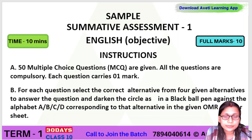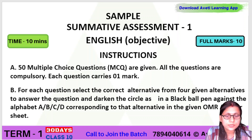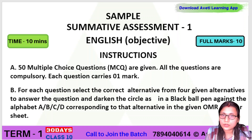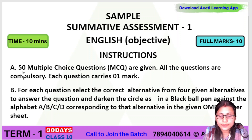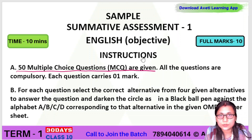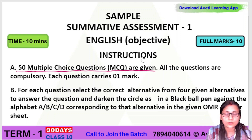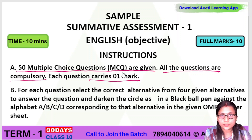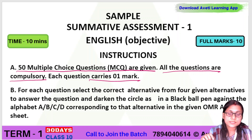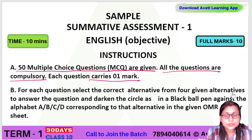We are presenting a sample for your Summative Assessment 1 on English, which focuses on objective type questions. Here are some instructions: there are 50 multiple choice questions given here. All the questions are compulsory and each question carries one mark. For each question, you should select the correct alternative from the four given alternatives.